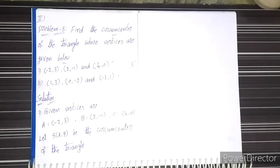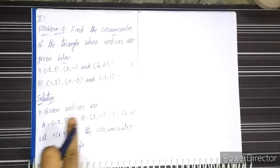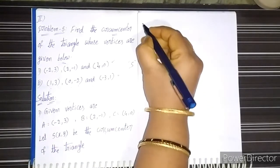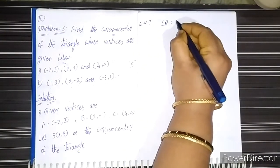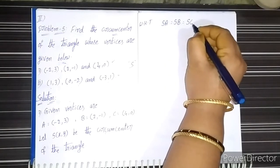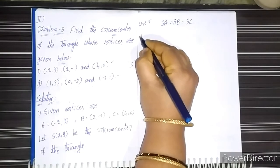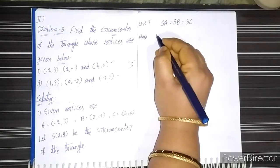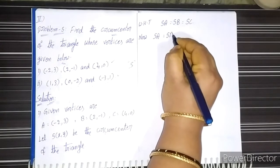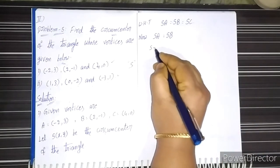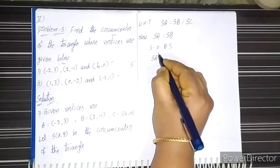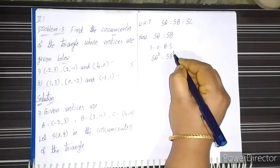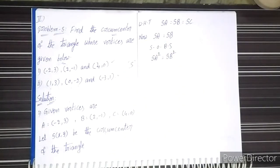We know the circumcenter is equidistant from each vertex of the triangle. Then we know the condition is SA = SB = SC. From this, first we take SA = SB. Squaring on both sides of the equation, it becomes SA² = SB². SA means the distance between the points S and A.